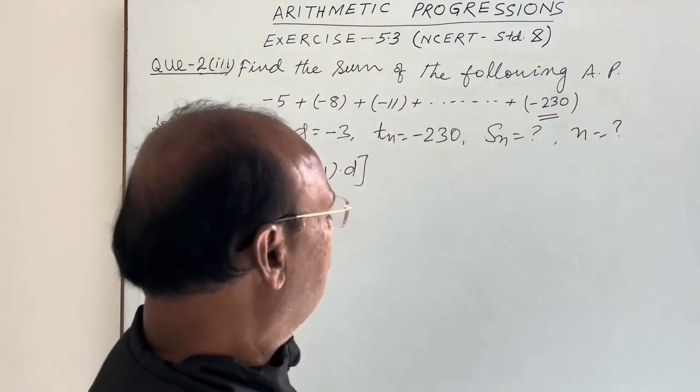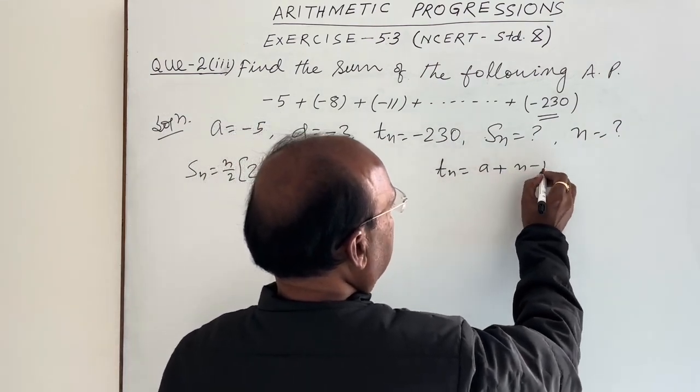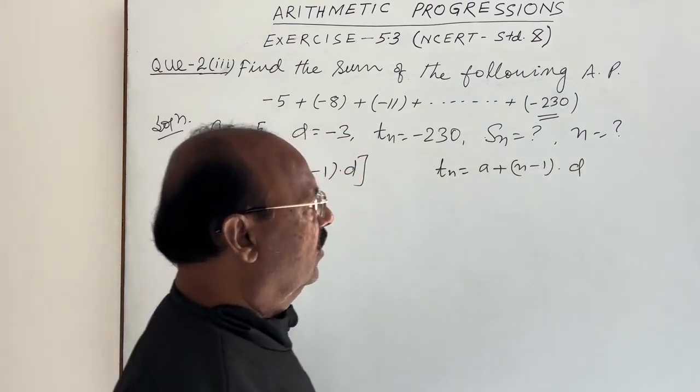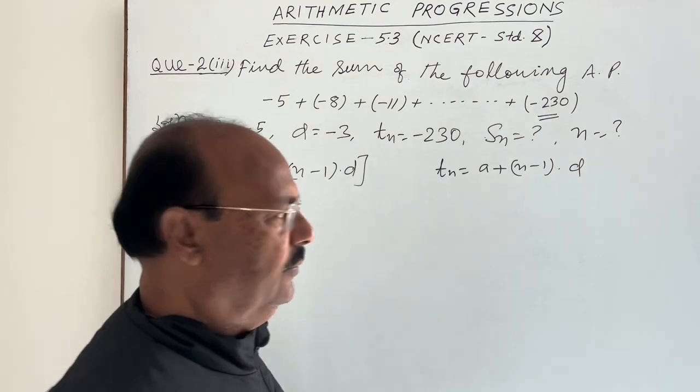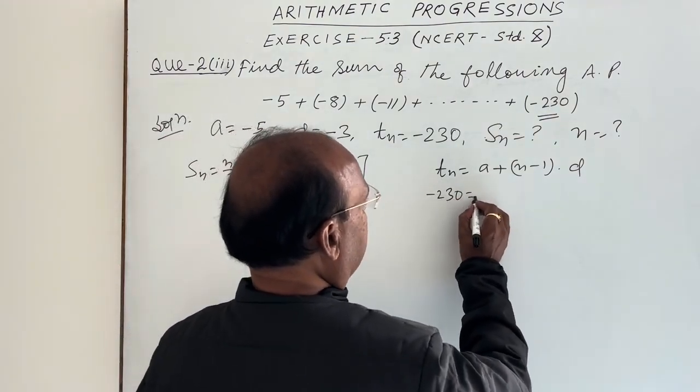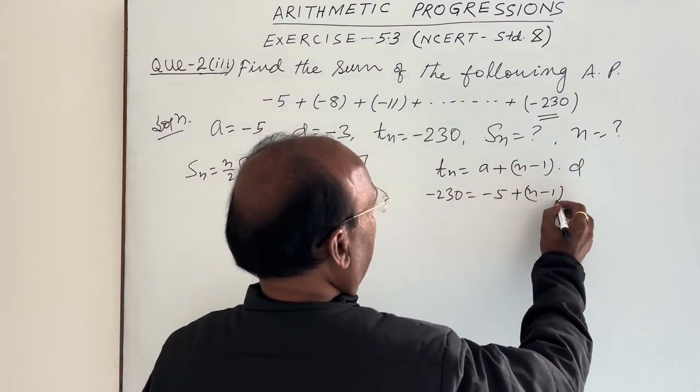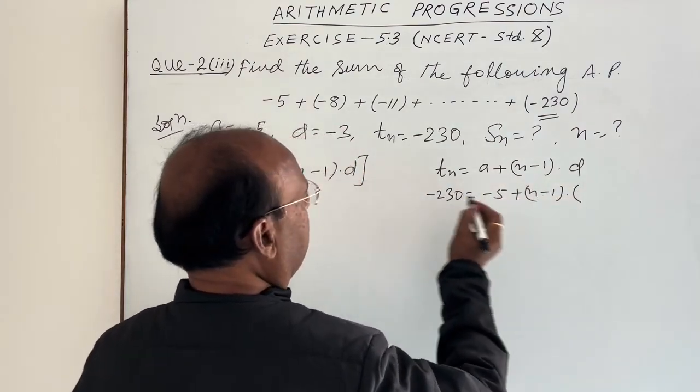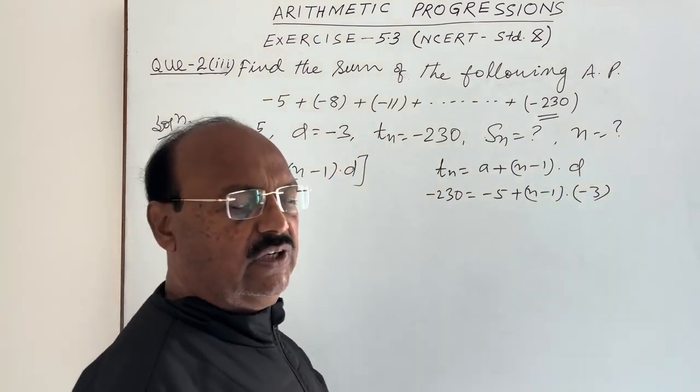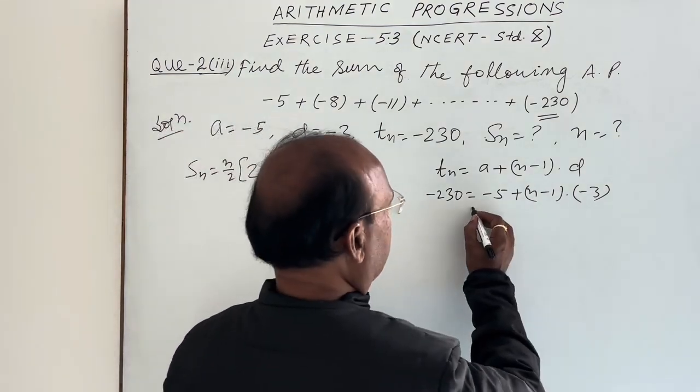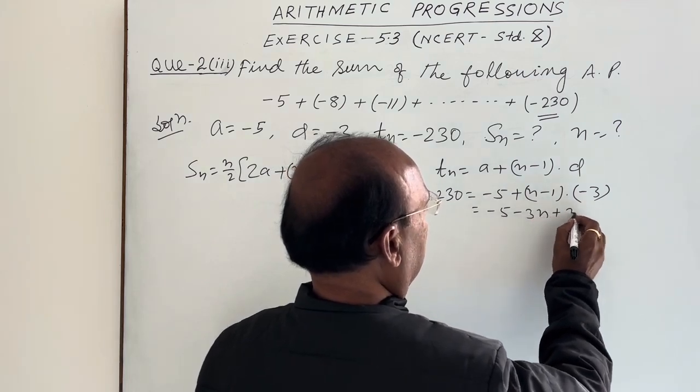For finding the value of N, we can use the formula: Tn is equal to A plus N minus 1 into D. So we are taking Tn is equal to minus 230. So minus 230 is equal to A, which is minus 5, plus N minus 1 into D, which is minus 3. Let us simplify it. After simplifying it, we will get the value of N. This is equal to minus 5 minus 3N plus 3.